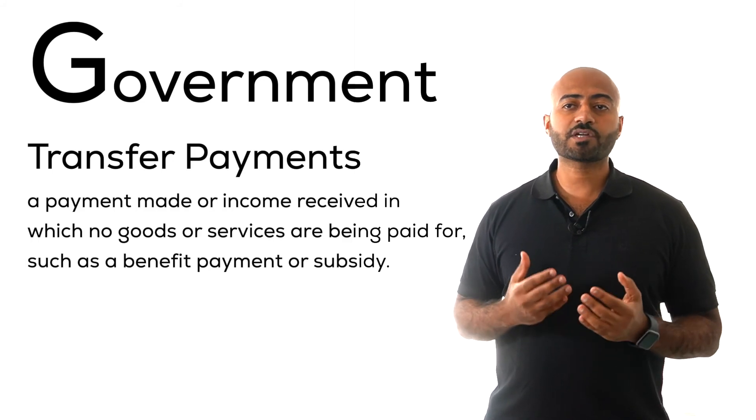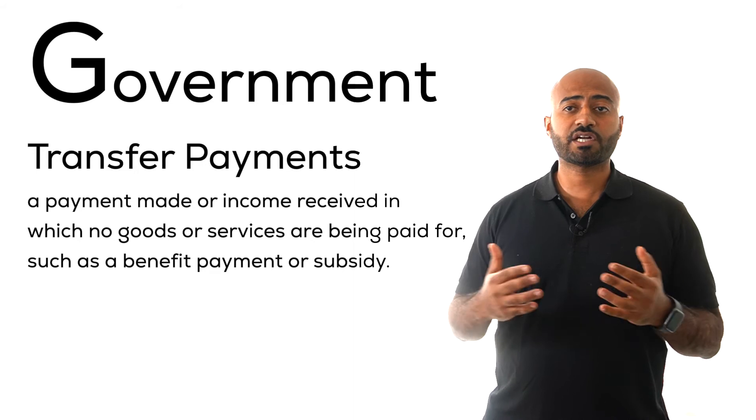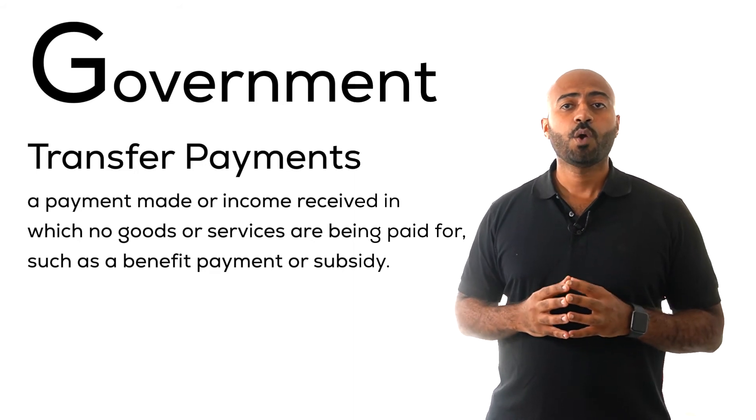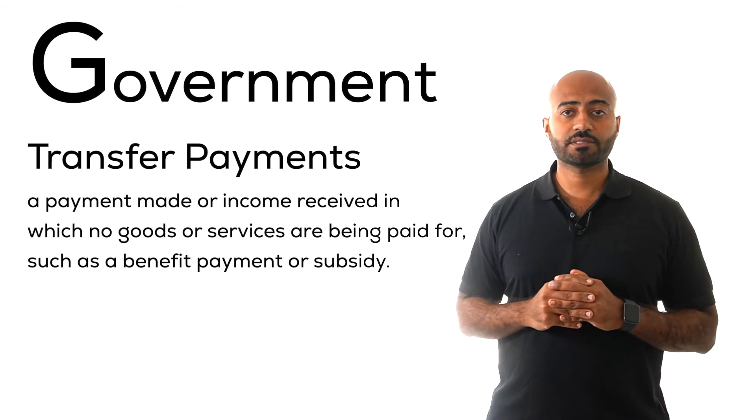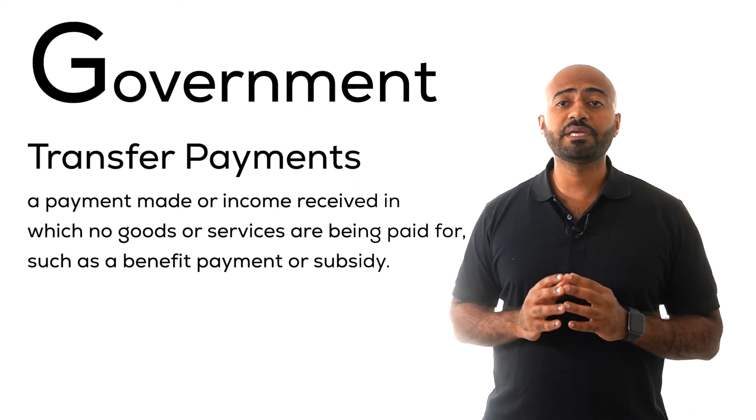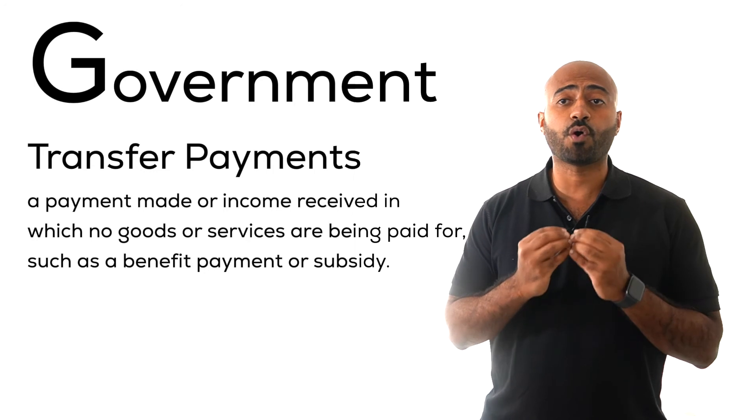Transfer payments are payments to people like social security, Medicare, unemployment insurance, welfare programs, and subsidies. These are examples of transfer payments. They are not included in GDP because they are not payments for goods or services.